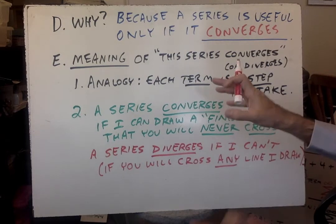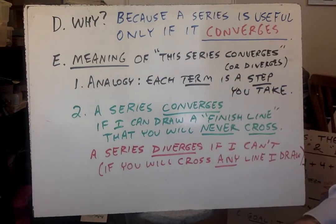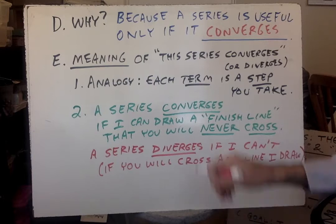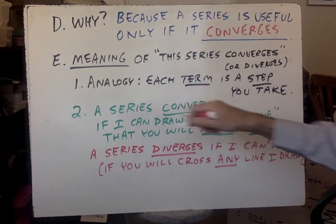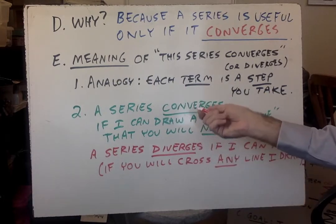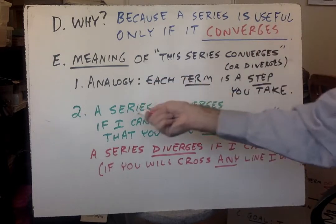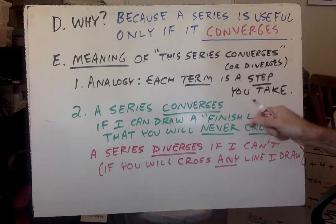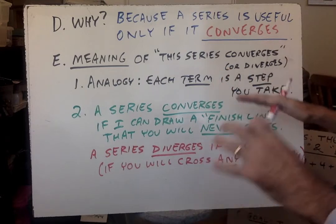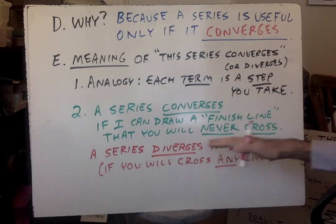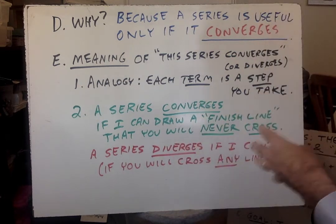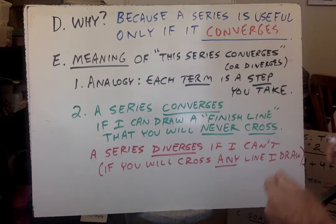So let's look at what this means. I want you to have an intuitive feel for what it means and not just memorize some pattern of letters. Think of each term like a step you take, so we're going to write them horizontally. A series converges if I can draw a finish line, and no matter how many steps you write or take, you will never cross that finish line. That's what we mean when we say a series converges. That's it, nothing else. If I can't do that, if no matter which line I draw, eventually you will cross it, then we say that the series diverges.